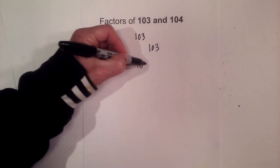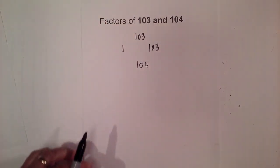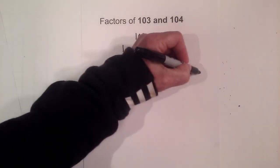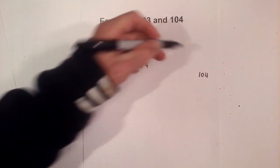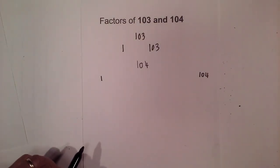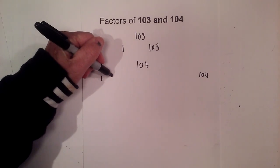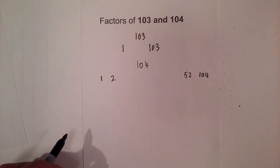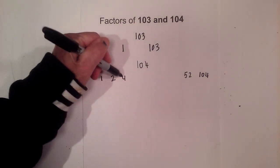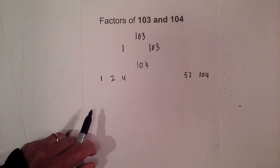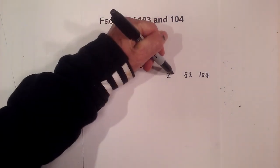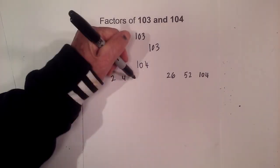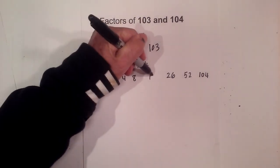Now let's move on to 104. 104 is a composite number, so I will begin with 1 times 104. Then 2 goes into 104 52 times. 3 does not go into 104, but 4 goes into 104 26 times. And then 8 times 13.